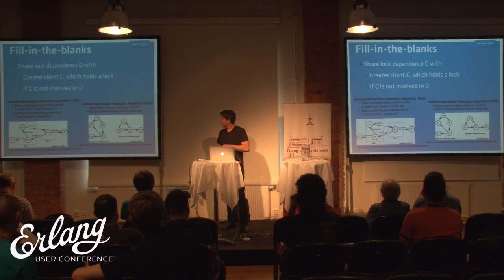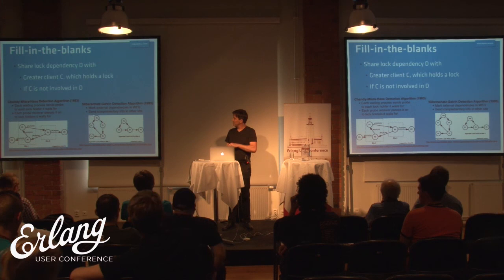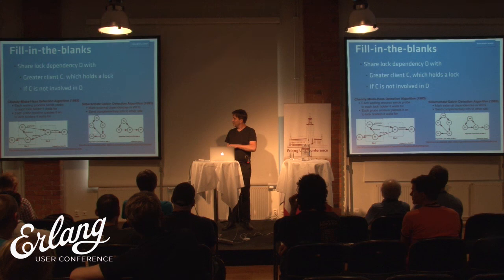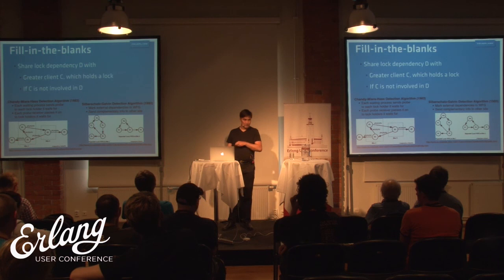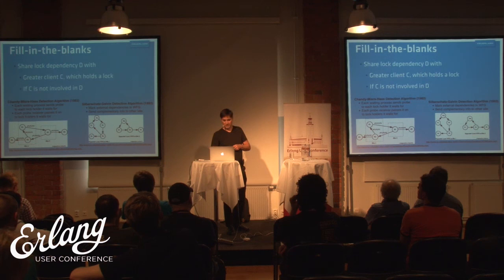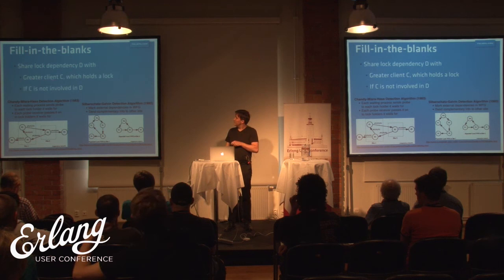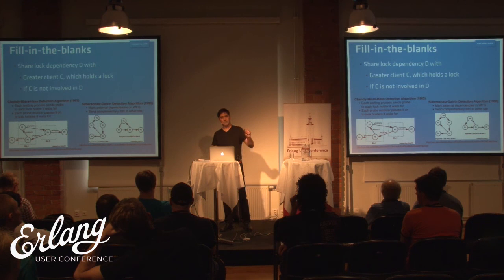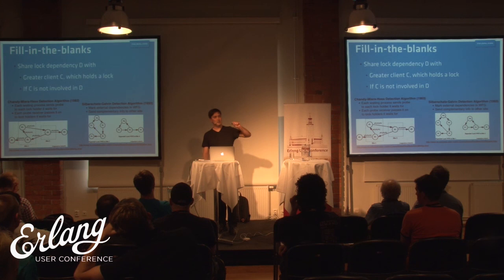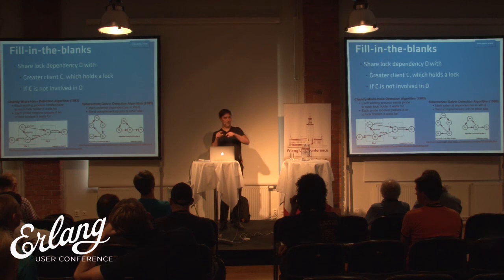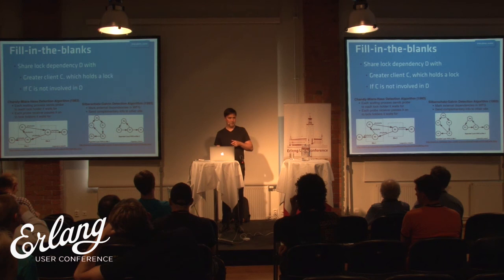In the Silberschatz-Galvin detection algorithm from 1993, you imagine one dependency graph per node with proxies indicating which node a process is on, then send the missing information to the relevant node. My approach is: for each lock holder whose PID is greater than ours and who is not already in the queue for that lock, we send that lock information to them. Since they're not in the queue, they wouldn't already know about it.